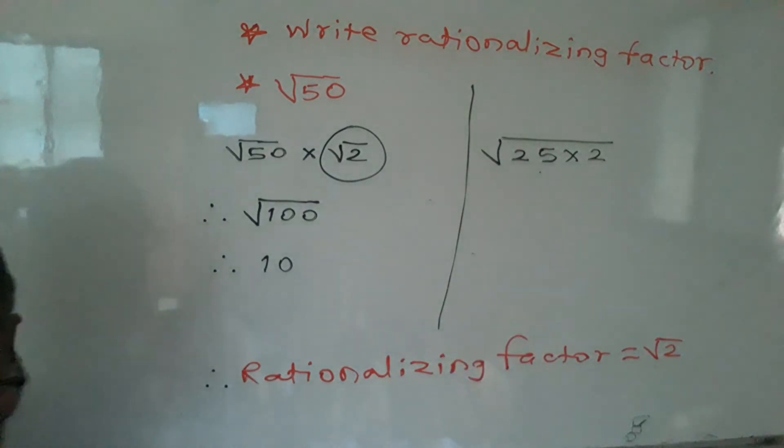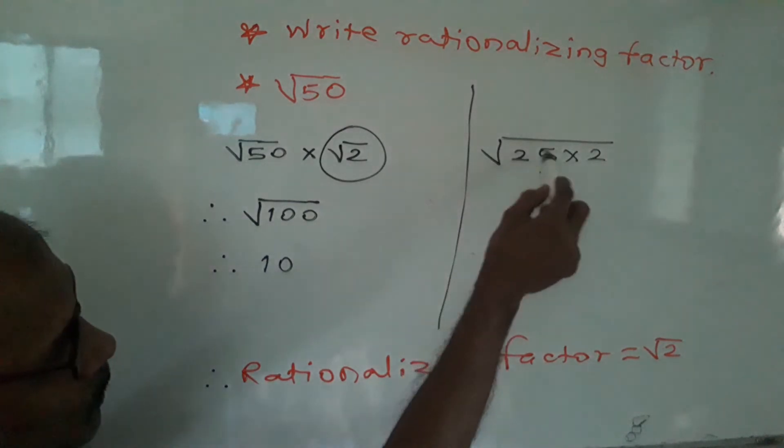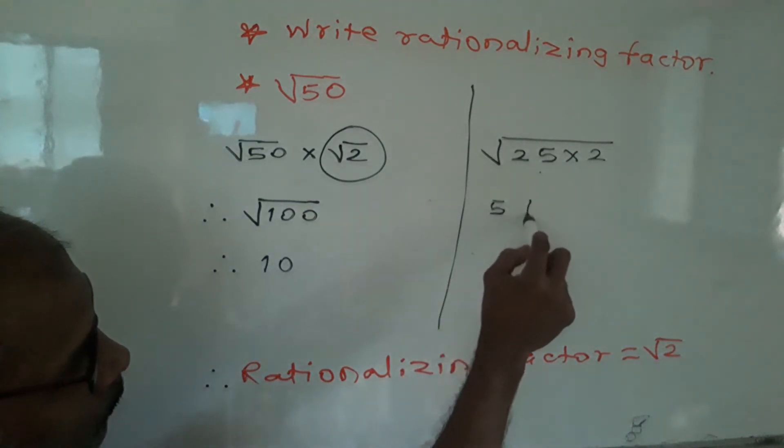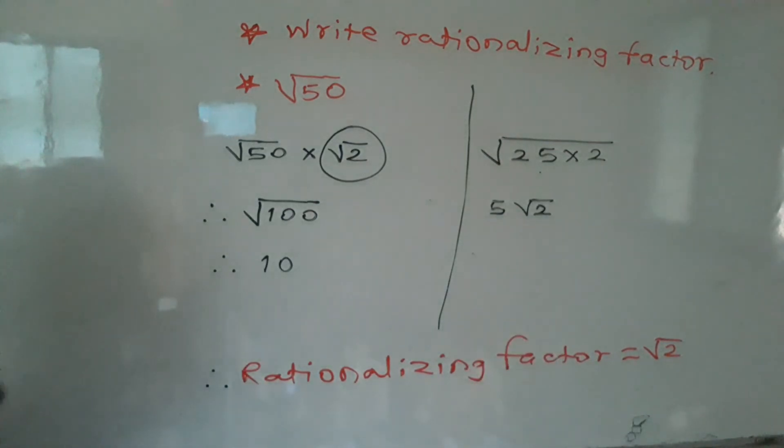25 times 2. Therefore, square root of 25 is 5, and remaining square root of 2.